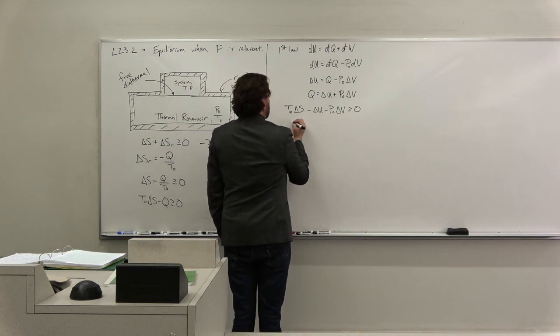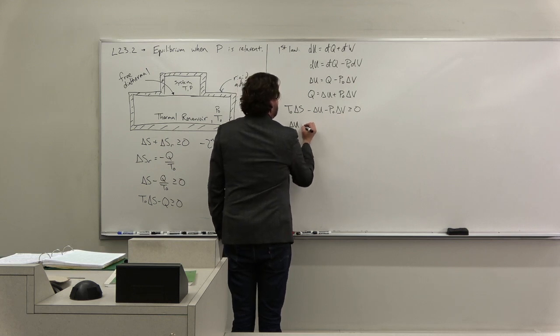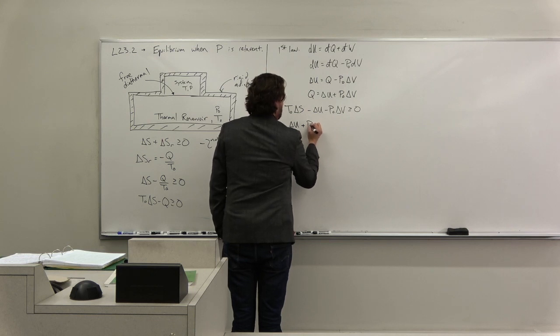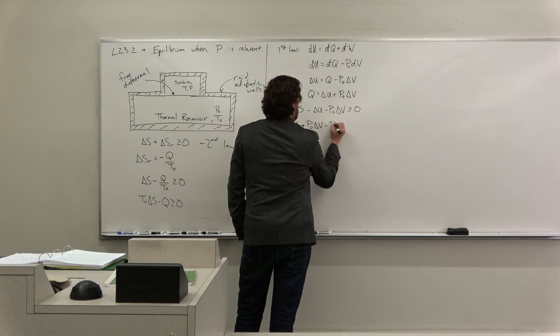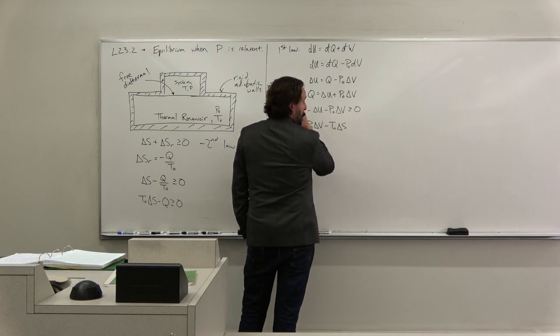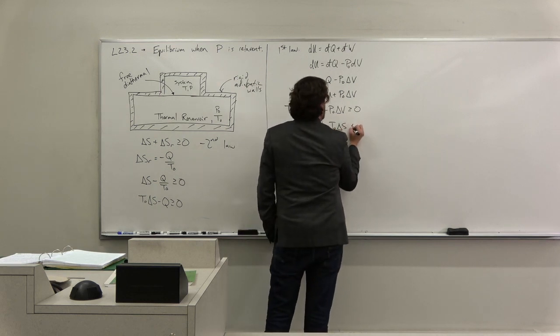So just like we did before, we can say, well, this is the same as delta U. Let's switch the sign. So we get delta U plus p0 delta V minus T0 delta S is less than or equal to zero.